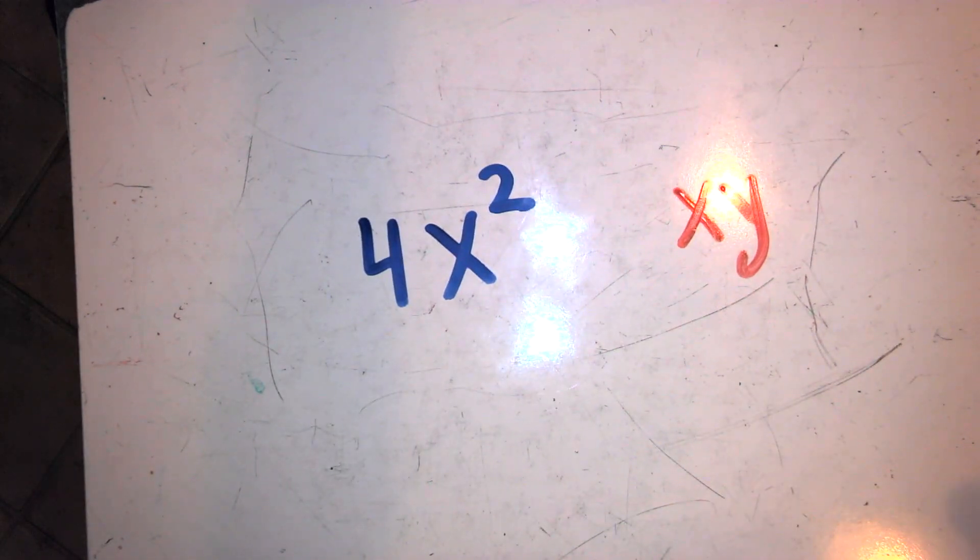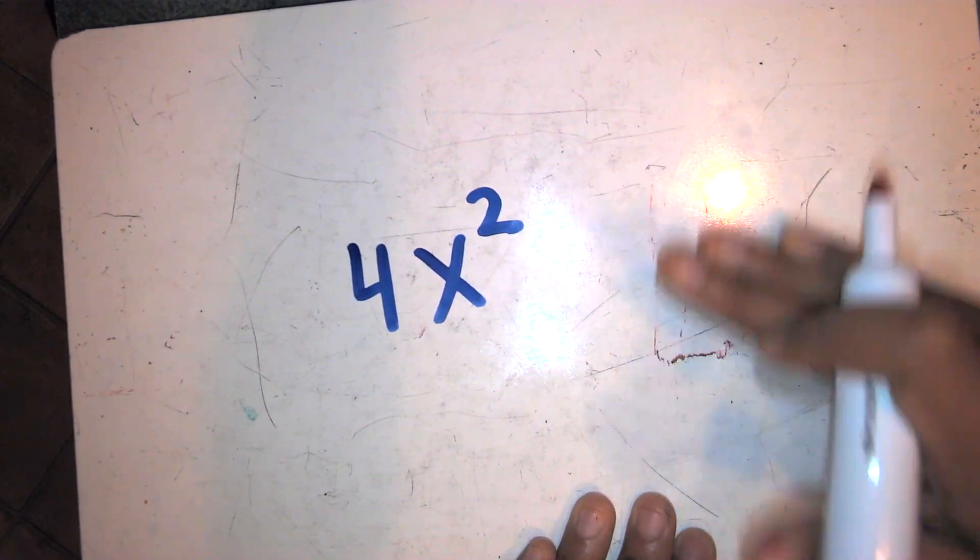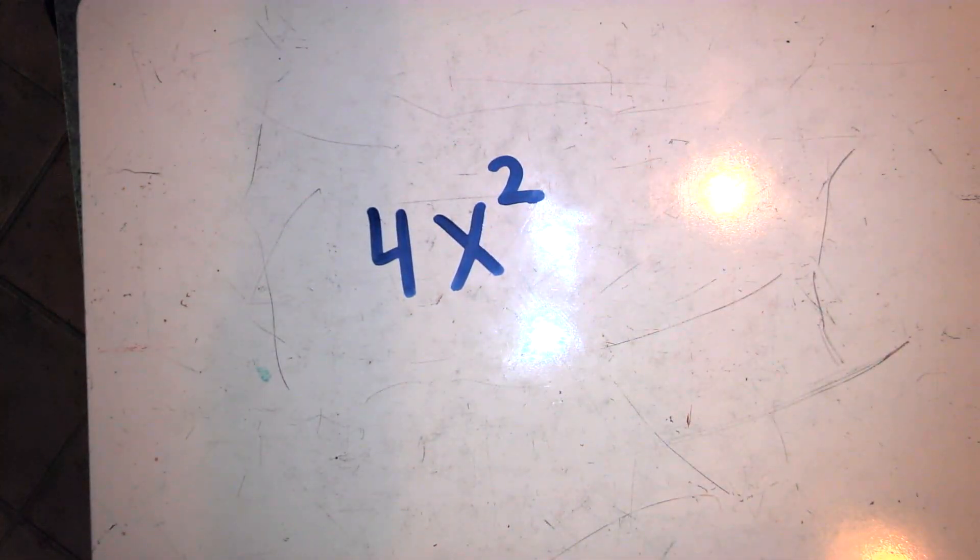Now when we combine like terms, when you're told to combine terms or identify terms that are like terms, they have to have the same variable and the same exponent.